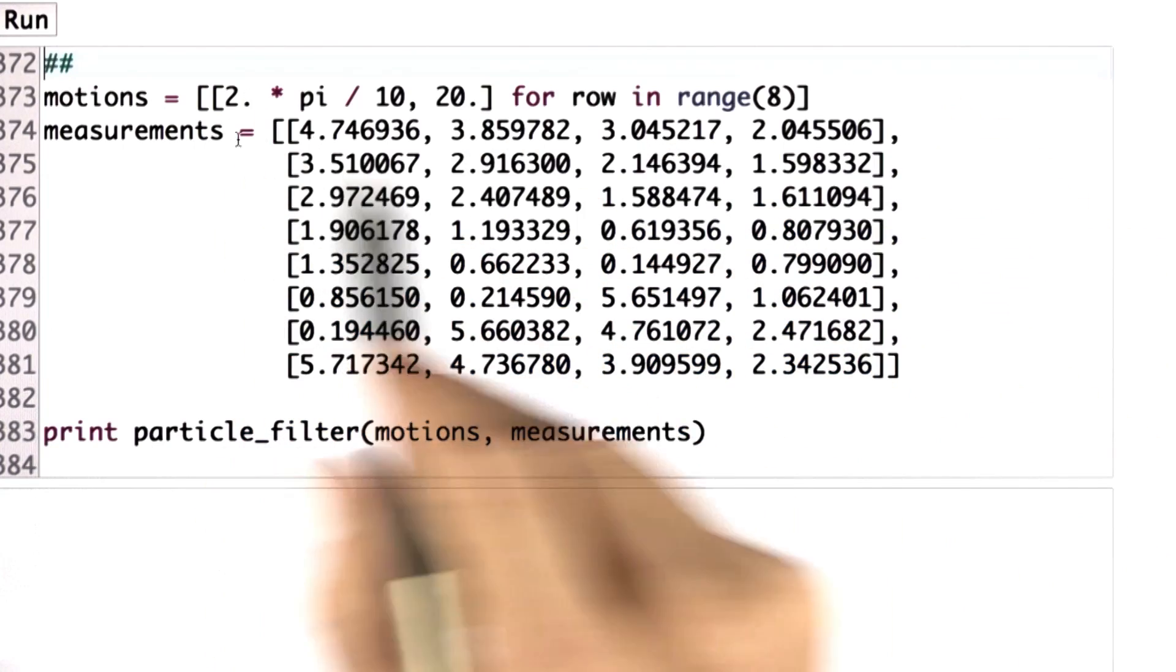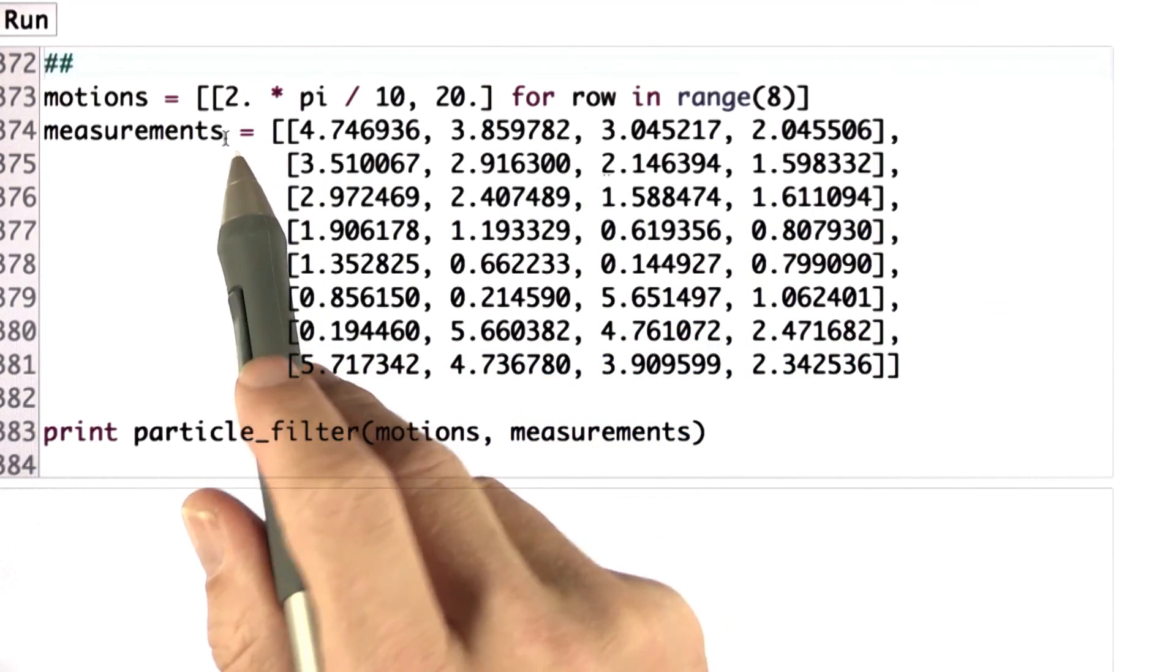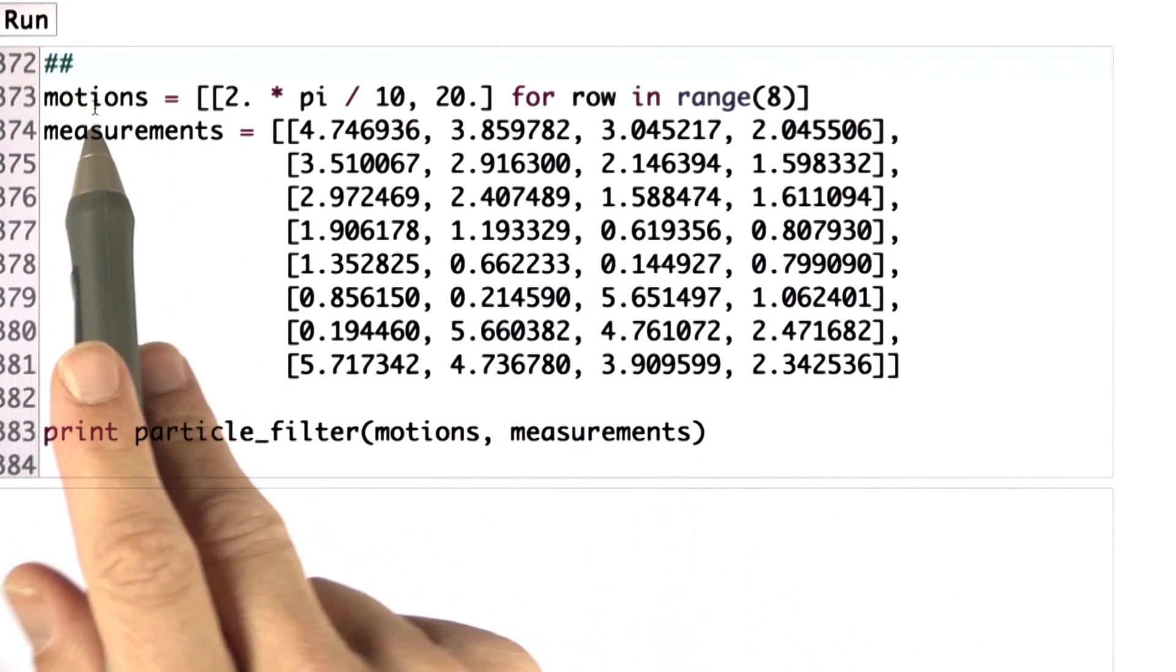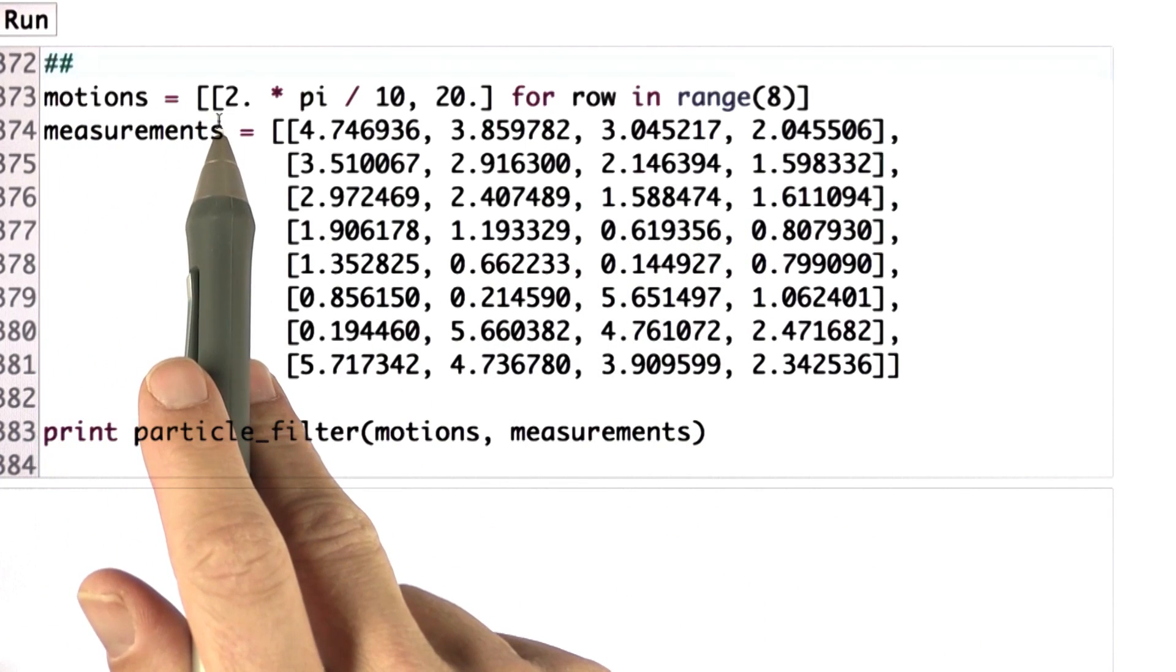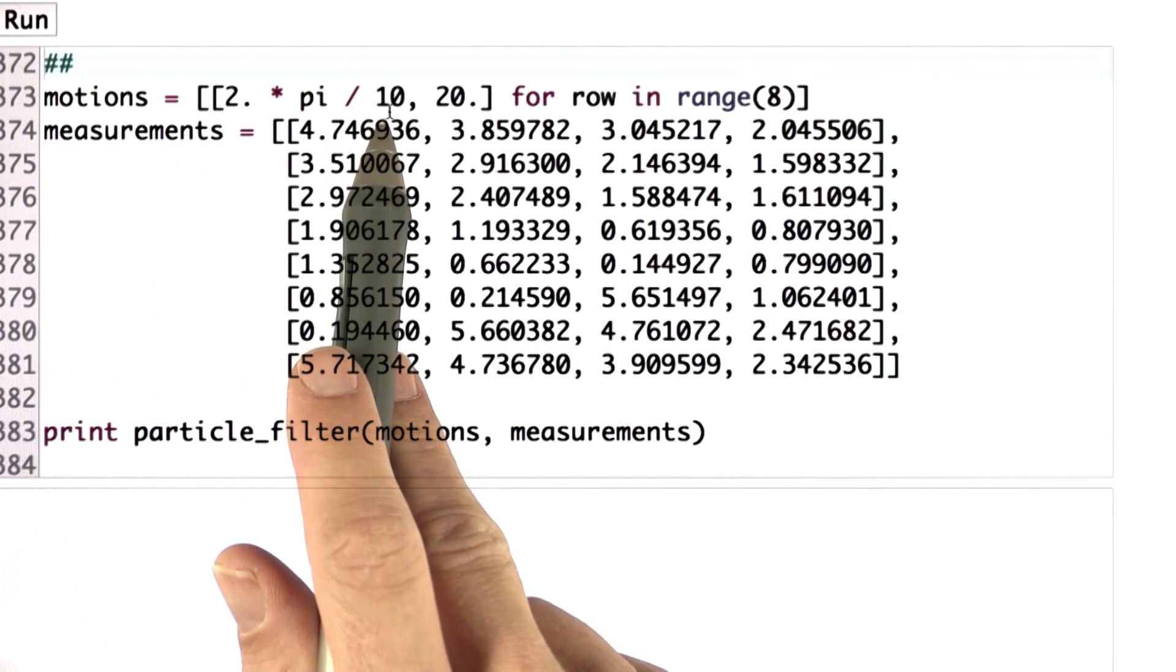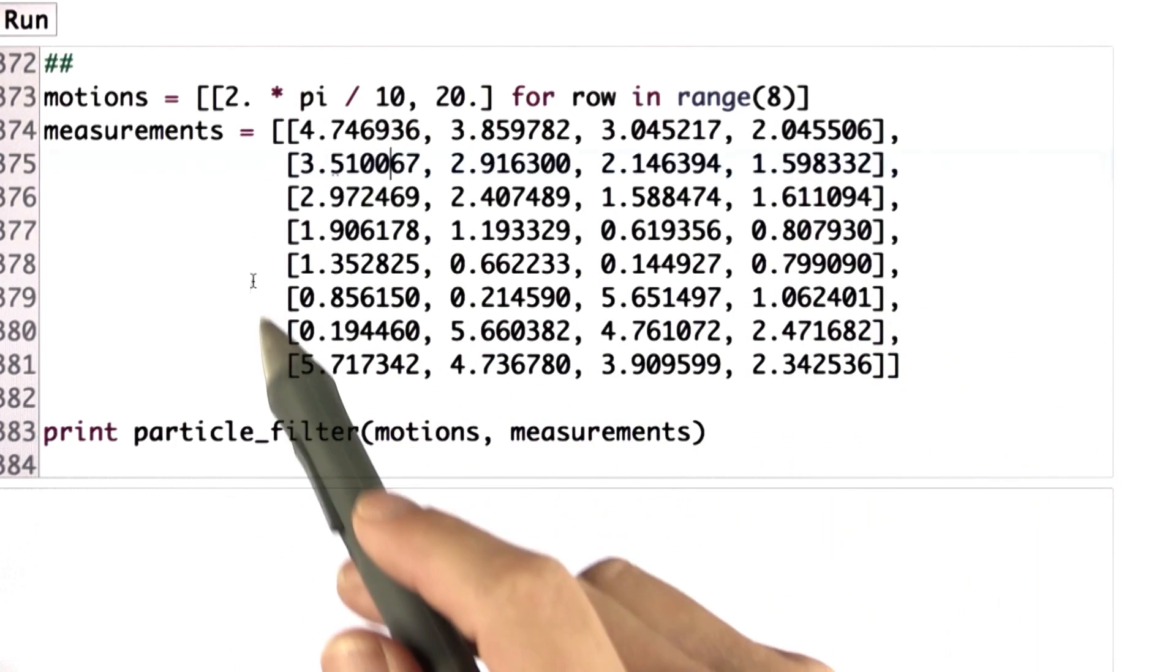So let's go all the way to the end. There's two test cases. This is the first test case, which are uncommented, so we can run it. And what this is, it creates a sequence of robot motions. Each of these time steps are what turns a little bit and moves forward.